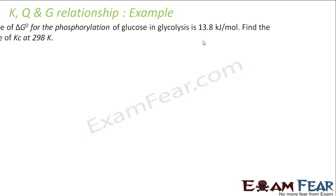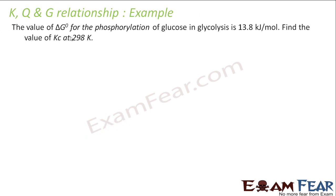Let's take some examples on this. The question says the value of delta G naught for the phosphorylation of glucose in glycolysis is 13.8 kilojoules per mole. Find the value of Kc.